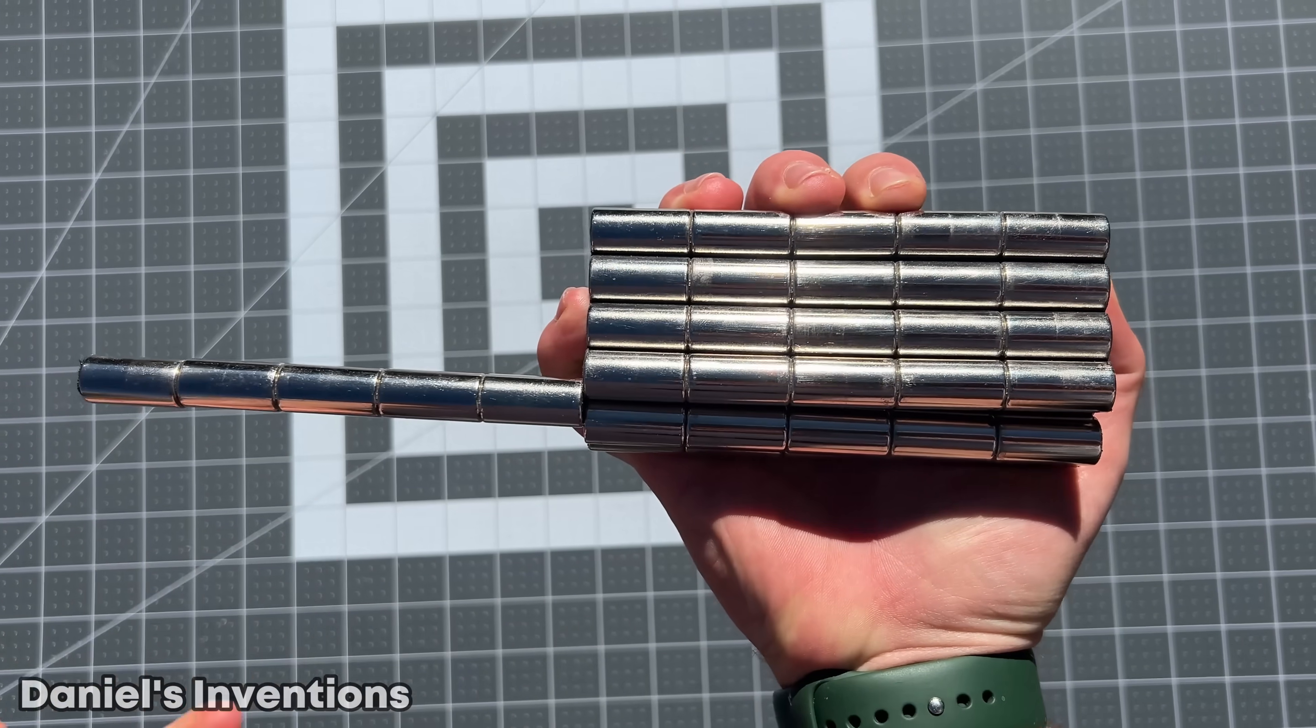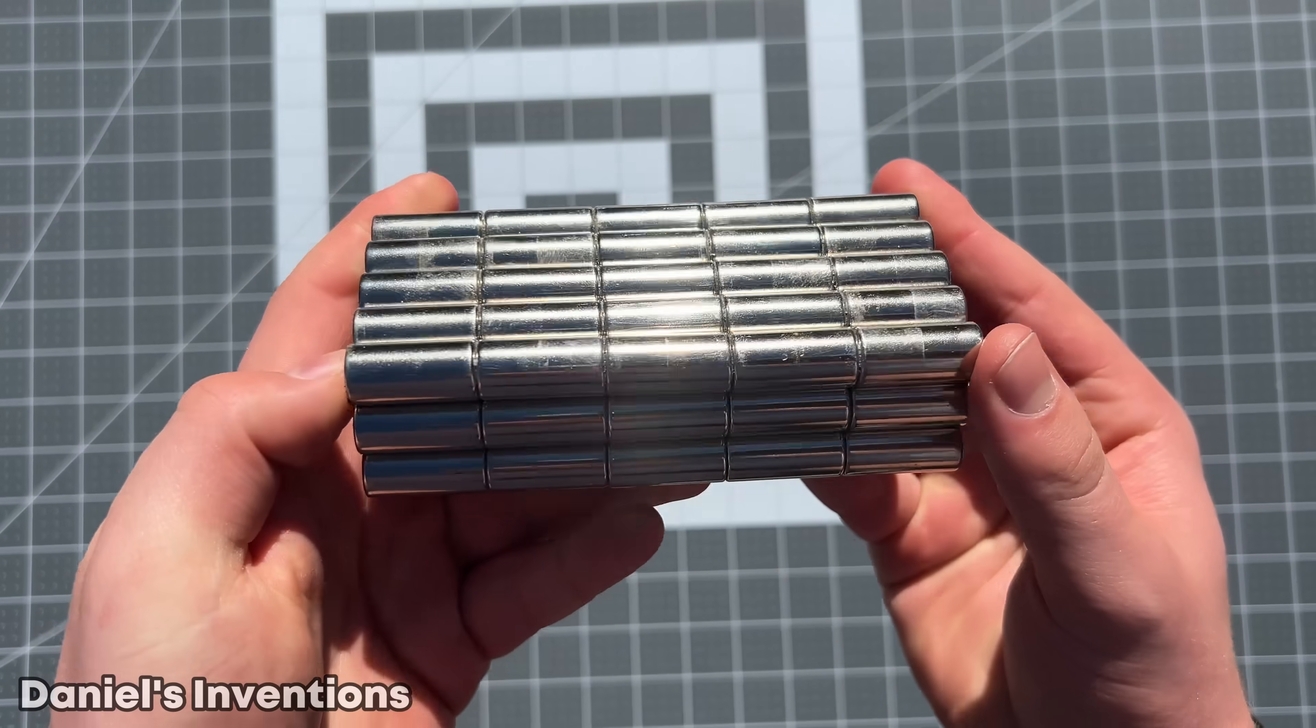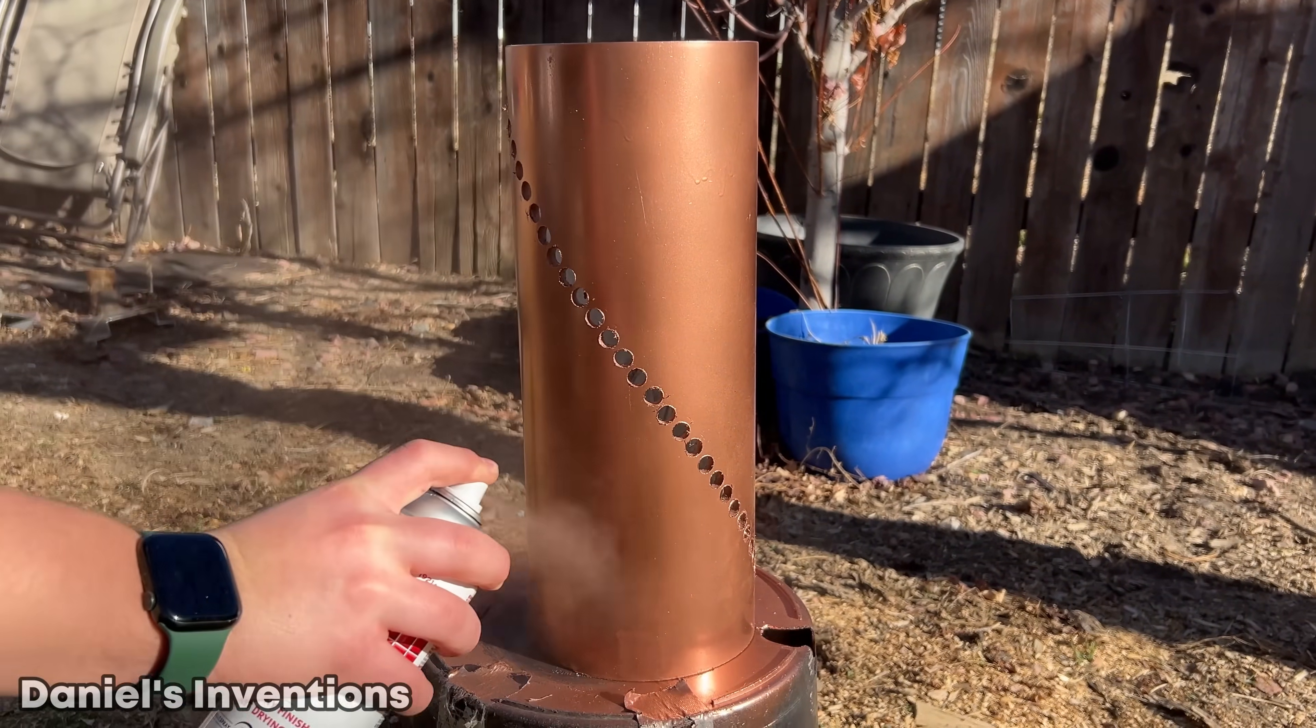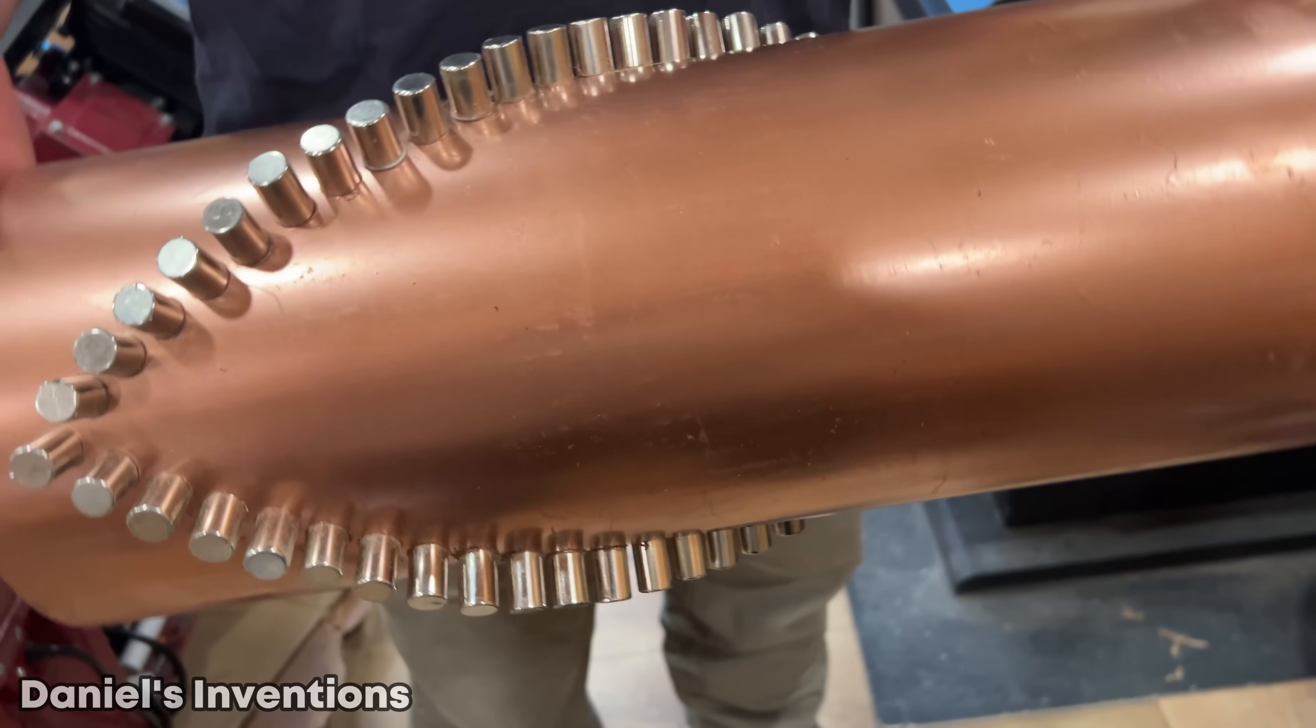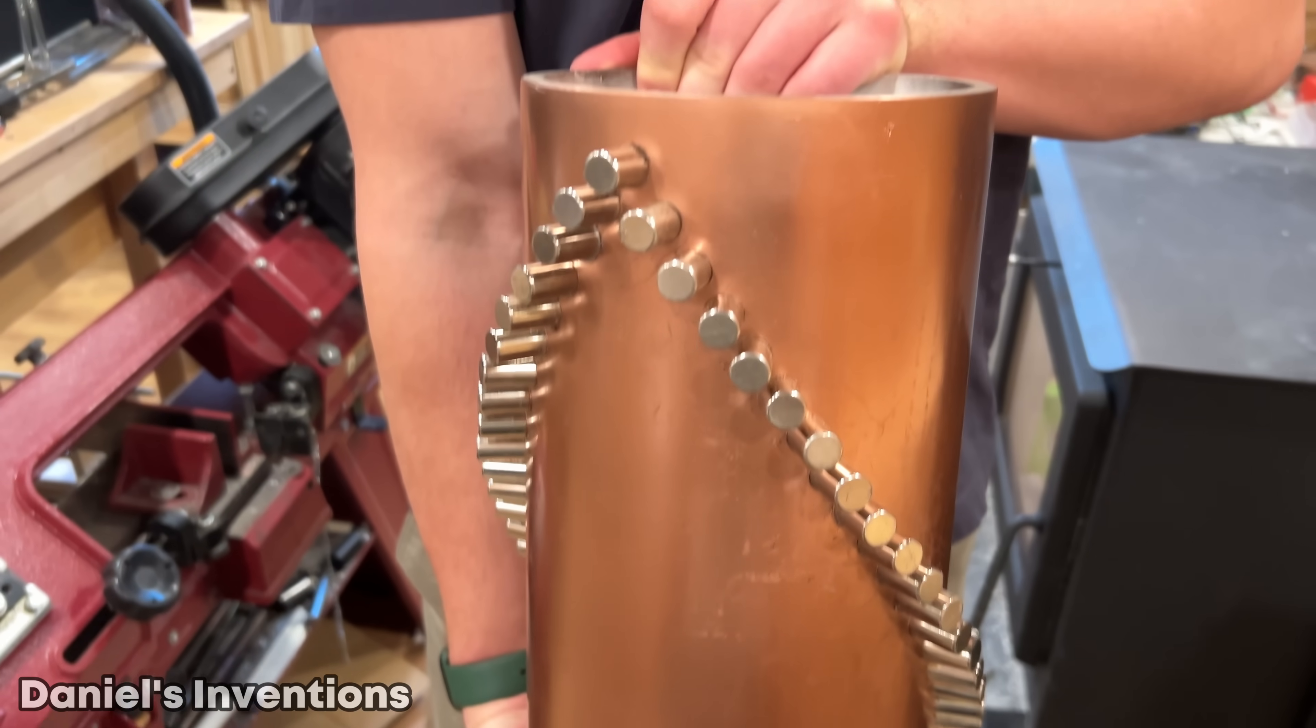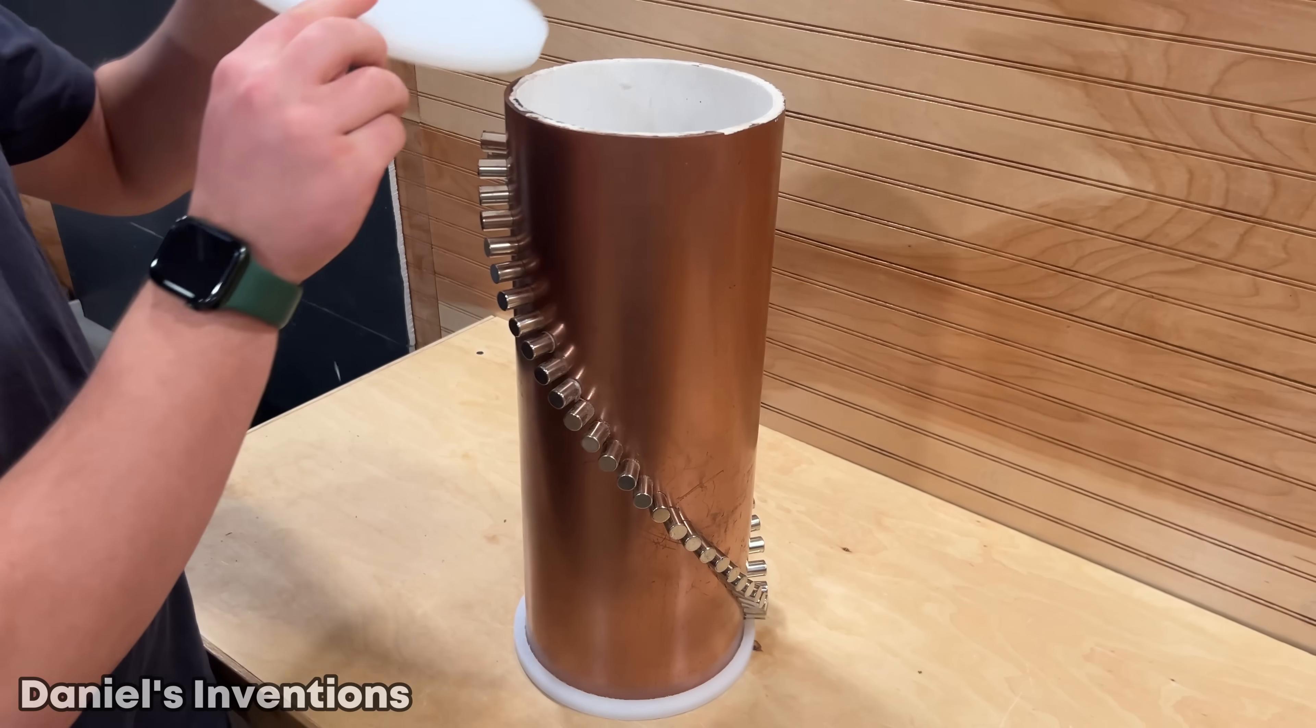The 56 permanent magnets I will be using for this project are half an inch by an inch. They are N52 with a pull force of 56 pounds. I installed all the magnets and they are a very tight fit. It took a couple of hours to put all of the magnets in the rotor.